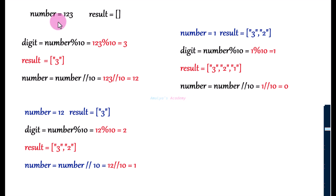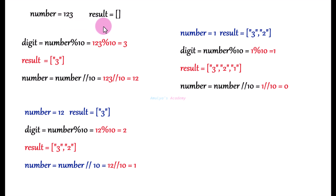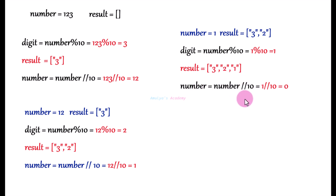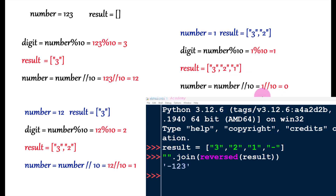Now what if the number is negative? You need to check whether the number is negative or not. If it is negative, take the absolute value first and perform the calculation the same way. In the result we will get '3', '2', '1', and after completing the calculations you need to append the minus symbol to the list, then reverse the list and join — then we get the correct output. Now let's write the program.